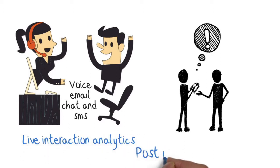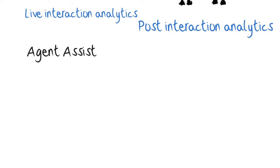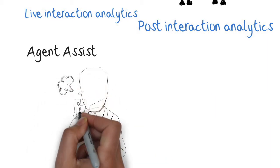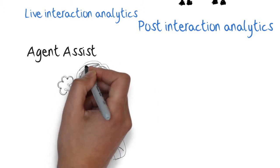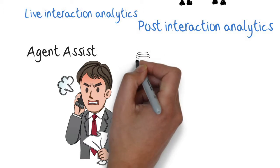Agent assist is an example of live analytics. During a chat conversation or live voice conversation, the system can detect customer frustrations and recommend that a supervisor be engaged or provide information to the agent about possible solutions to the problem.